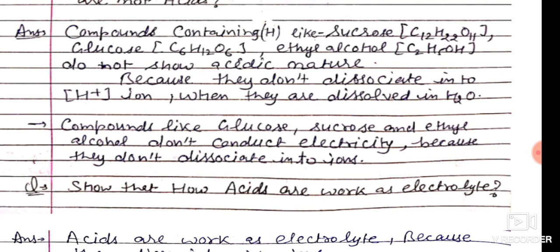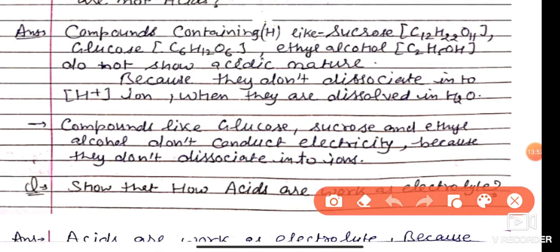Compounds like glucose, sucrose, and ethyl alcohol do not conduct electricity because they do not dissociate into ions — even though they contain hydrogen, they are not acids.